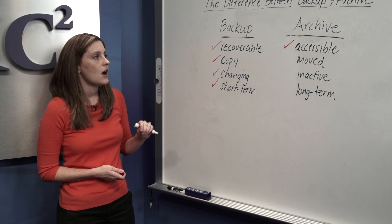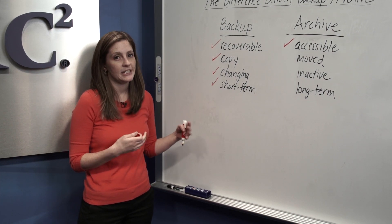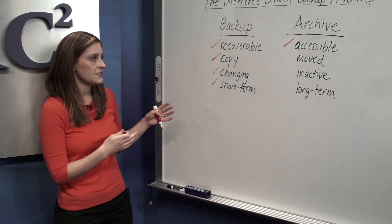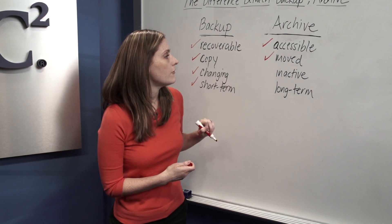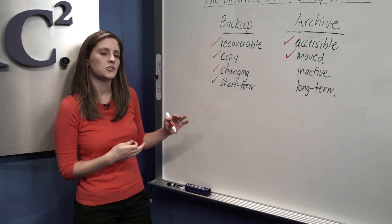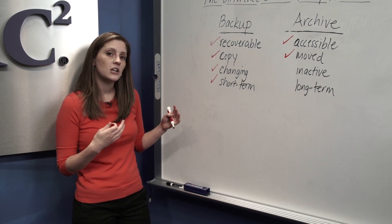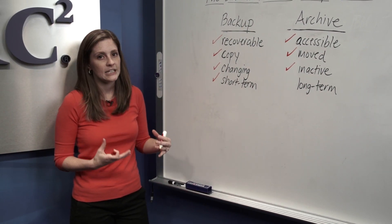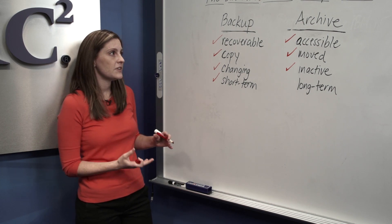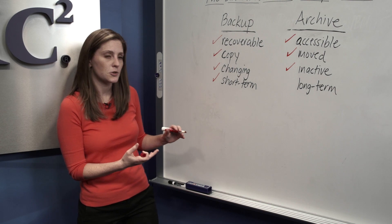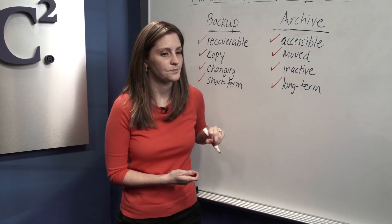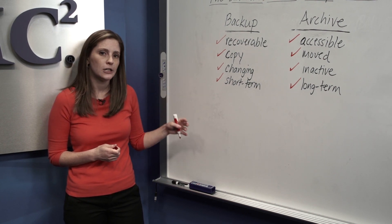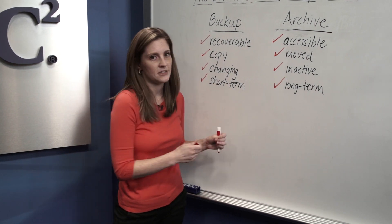Archives, on the other hand, are not copies, but a primary instance of data that is no longer being used or is inactive. An archive is when you take the primary piece of data and move it off of primary storage onto a more cost-effective protection storage tier. When data is no longer changing or is inactive, but you need to keep it for compliance purposes or want to keep it because it has business value, it's best to move it off of primary storage and onto protection storage to keep it long term. Archives are about being able to access your information, usually at an individual file, email, or other individual piece of content level.